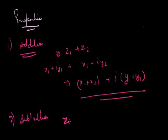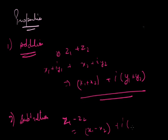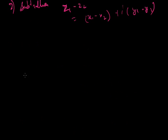Similarly for subtraction: z1 minus z2 equals (x1 minus x2) plus iota (y1 minus y2) — subtract the imaginary parts in the same order. Now what about multiplication?